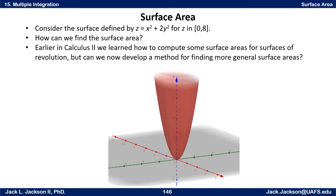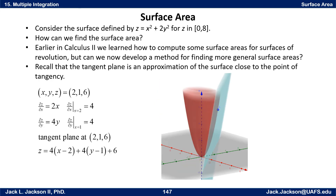The first thing I want to do in developing a method for this is to consider the tangent plane. Let's take a particular point — when x is 2 and y is 1, we get 4 plus 2 times 1 equals 6, so z should be 6. So the point (2, 1, 6) is on the surface. Remember, the tangent plane is a good approximation of the surface, at least if you're close to that point of tangency.